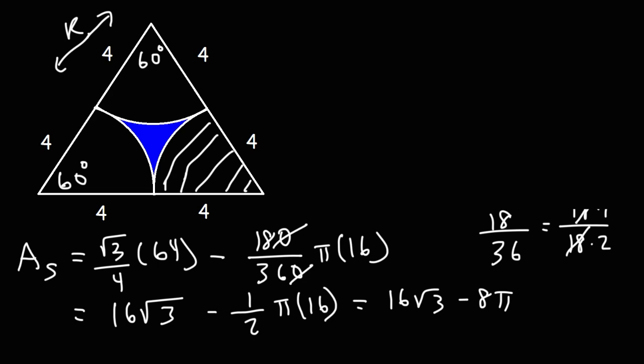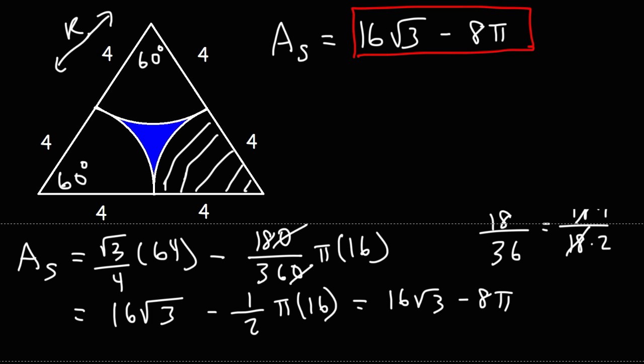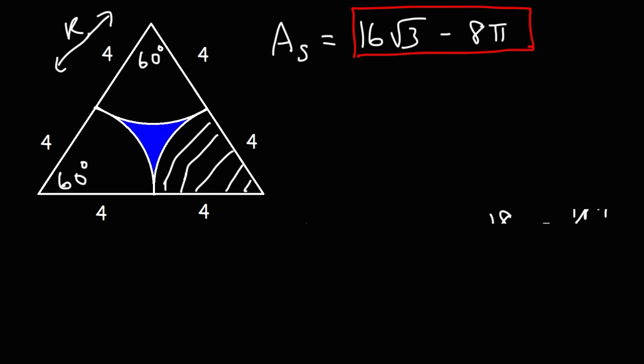So we can write the final answer as 16 times the square root of 3 minus 8 pi. This is the exact answer, the area of the shaded region. Now if you want to get the decimal value of that, I'm going to give it to you in just a second.